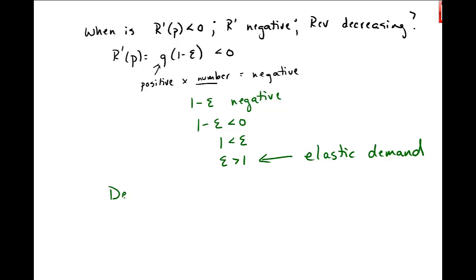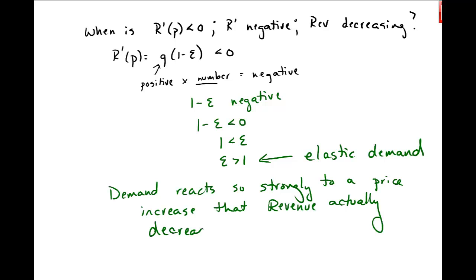This epsilon bigger than 1 is where we say we have elastic demand. That demand reacts so strongly to an increase in price that revenue will actually decrease.